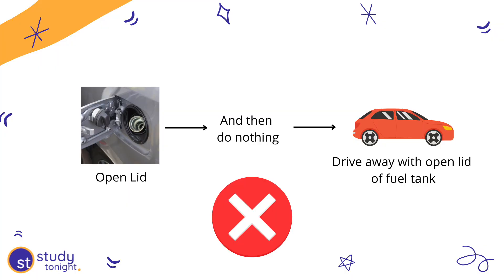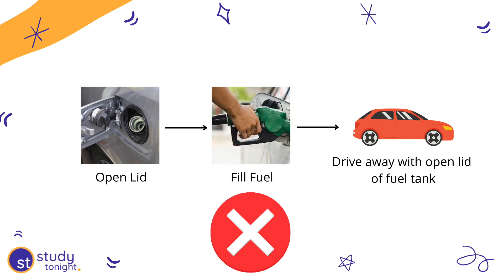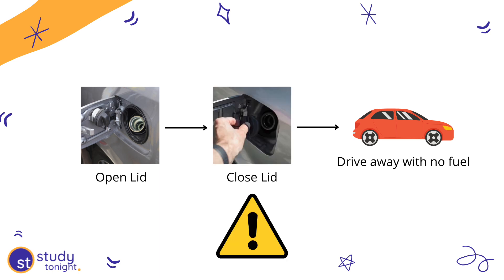For example, if I open the lid and then forget what I was doing, sit back in the car without closing the lid and drive away, then I'm moving around with my fuel tank open, which is not safe. If I open the lid, fill the fuel and do not close the lid — again, dangerous. If I open the lid and then close it without filling the tank, then I will leave the fuel station without any fuel. Hence, it's a single unit of work with three steps and all three steps must be completed in order for the task to be completed.